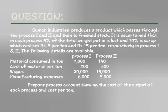Material consumed: Process 1 is 2000 units, Process 2 is 140 units. Cost of material: Process 1 is Rs. 200 per unit, Process 2 is Rs. 300 per unit. Wages: Process 1 is Rs. 20,000, Process 2 is Rs. 10,000. Manufacturing expenses: Process 1 is Rs. 6,000, Process 2 is Rs. 5,000. Prepare the process accounts.